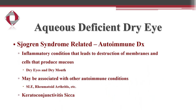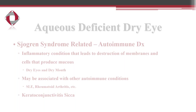Sjogren's syndrome is an autoimmune disease that causes inflammation and destruction of the mucous membranes and cells of the body. Dry eyes and dry mouth are very common. These patients oftentimes have significant dry eye syndromes that really affect their quality of life. This can be further exacerbated by other autoimmune conditions such as lupus and rheumatoid arthritis. We often refer to this type of dry eye as keratoconjunctivitis sicca.